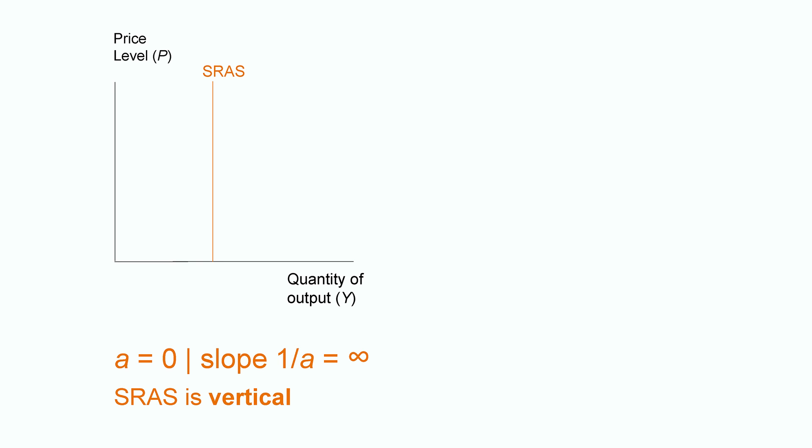The constant A is a very important variable in our short run aggregate supply equation, because it determines the slope of the aggregate supply curve. If A is equal to 0, for example, slope is equal to 1 divided by 0, which is infinity. So, short run aggregate supply is going to be vertical.